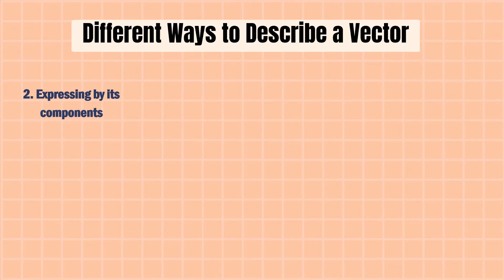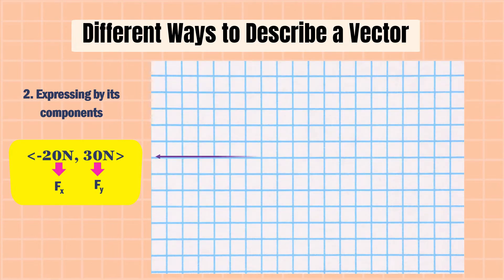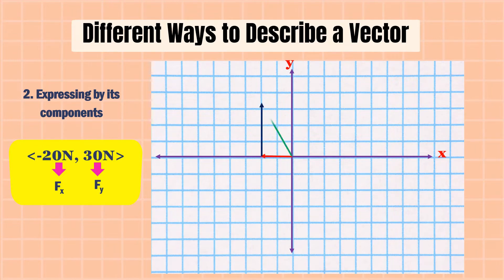Another example: F sub x is negative 20 newtons and F sub y is 30 newtons. So where does the vector lie? It lies in the second quadrant, because F sub x is negative and F sub y is positive.